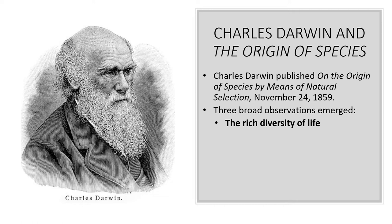The first observation is that there's a rich diversity of life. If we go outside you can see that there are dozens of different types of flowers just in a single little area, lots of different types of birds, insects, and things like that. We don't just have one type of bird or one type of flower in the entire world — we have thousands of different types, resulting in this rich diversity.